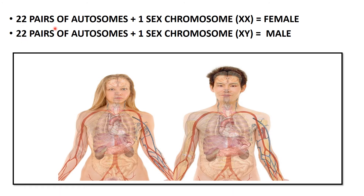22 pairs of autosomes and one sex chromosome — if it is XX, the individual will be female; if the sex chromosome is XY, the individual will be male. This is a very basic thing everyone knows.